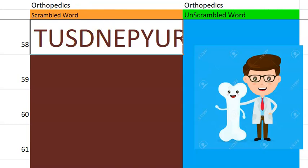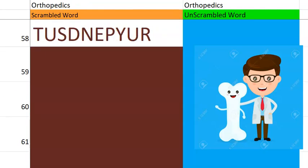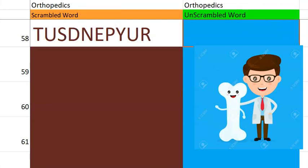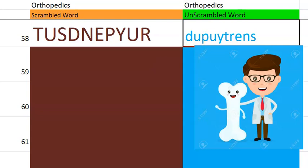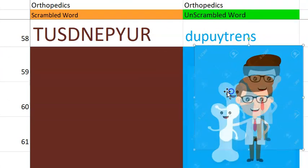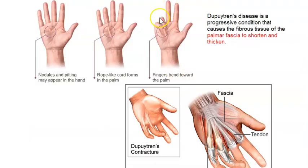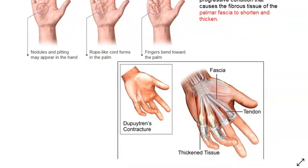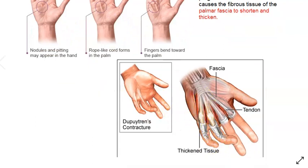58th one — into the palm. This is because the palmar fascia shortens and thickens. This is Dupuytren's contracture. This can happen because of smoking, etc.